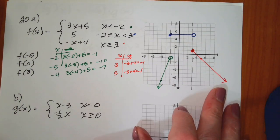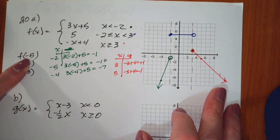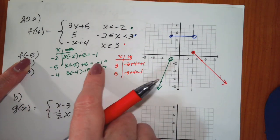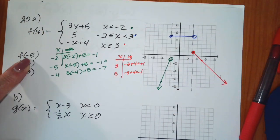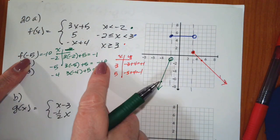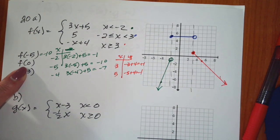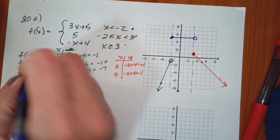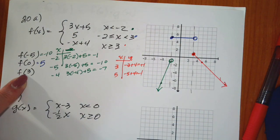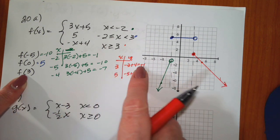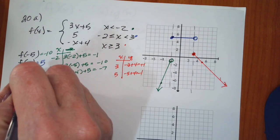If you've graphed it correctly, you can find all of these values from your function. f of negative 5: we already know that's equal to negative 10, because I had already done that. f of 0: when x is 0, y is 5. And f of 3 — we had already done that one as well — that's going to give me 1. So those are the values that you need.